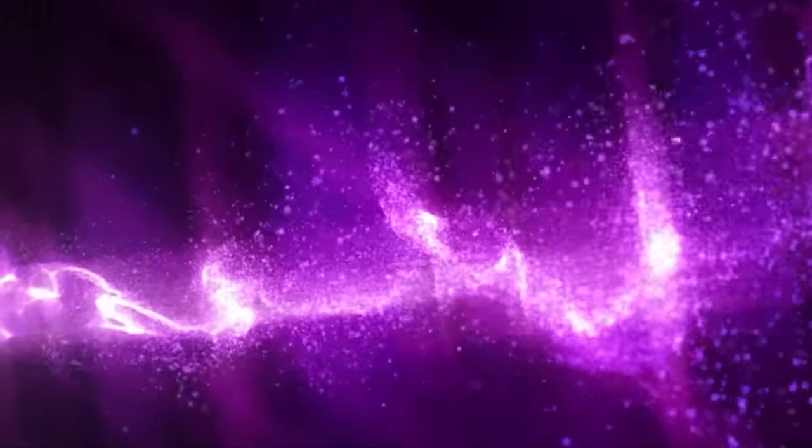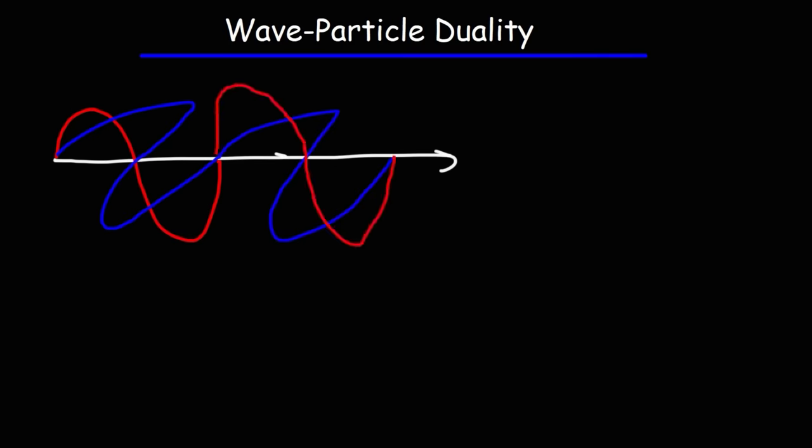Light consists of particles called photons. However, this behavior is only noticeable when observed. Otherwise, they act as electromagnetic waves. This phenomenon is known as the wave-particle duality concept. And yes, it is strange.